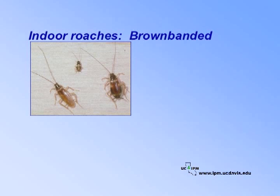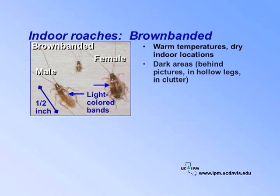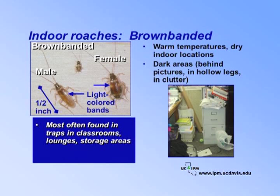Besides the German cockroach, the brown-banded roach is the only other species that inhabits buildings. Adults are half an inch long; males are golden tan in color while females are dark brown. There are light-colored bands on the wings, abdomen, and sides. Brown-banded roaches prefer warm temperatures, about 80 degrees, and dry indoor locations. They are most often found in dark areas, such as behind pictures on walls, in hollow legs of furniture, and in clutter. Eggs are deposited in clusters on furniture or in appliances, usually on a hidden, vertical surface. Eggs are mostly produced in the summer. These roaches are most often found in traps in warm, dark areas in classrooms, lounges, or storage areas, especially where there is a lot of clutter or paper stacked on the floor.